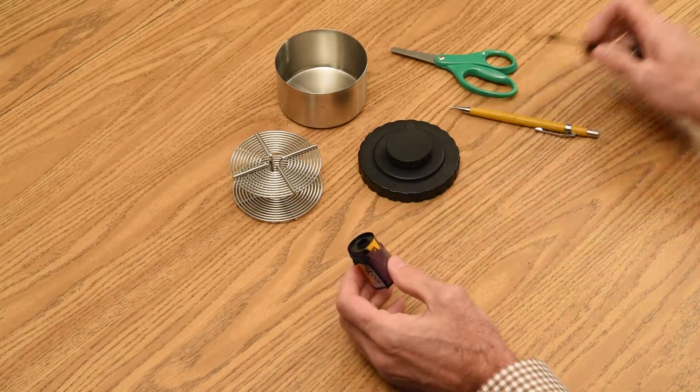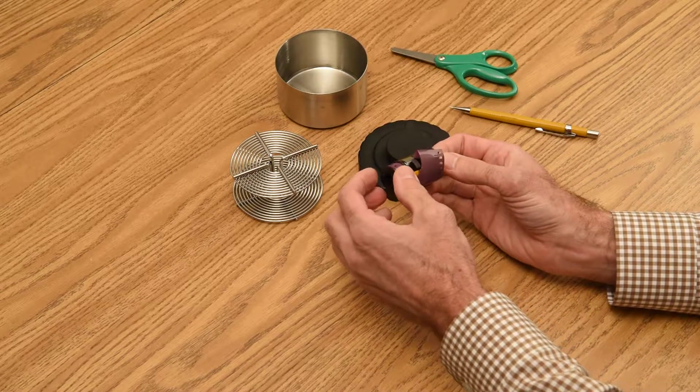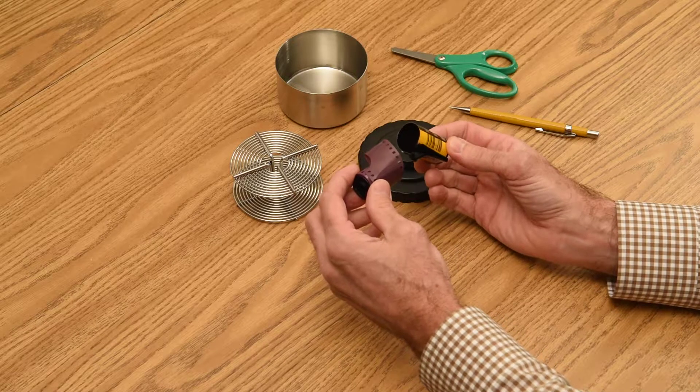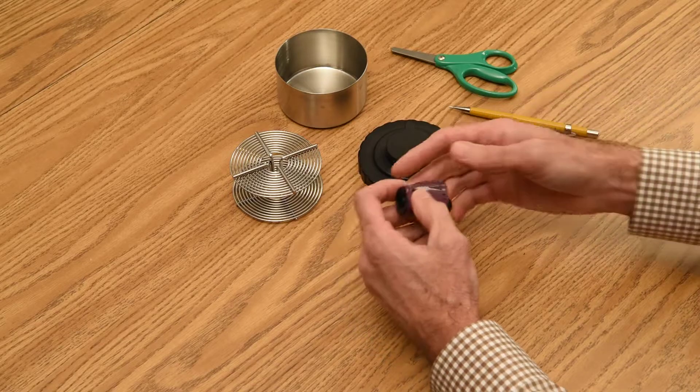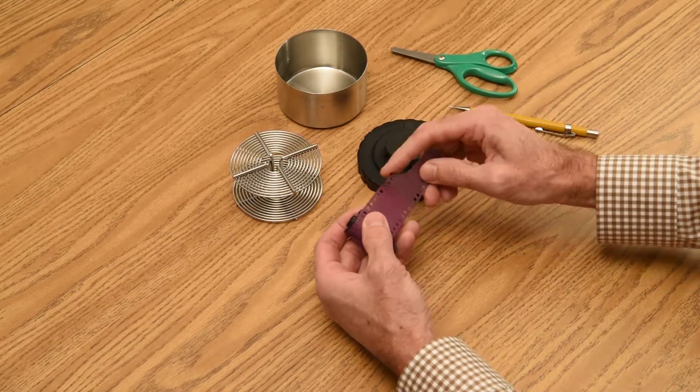Once you have the film off, you put the can opener aside and then slide the film with its interior spool out of the cassette, the shell of the cassette and discard that. Now again in the dark, you need to cut the leader off the film.